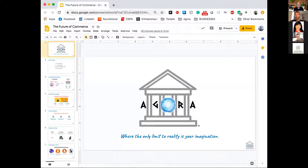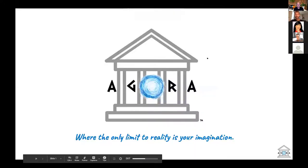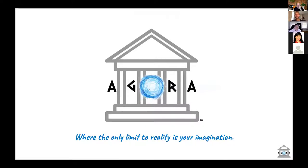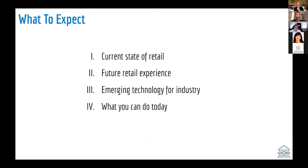Thank you for the introduction. Can you hear me okay? Just want to make sure before I get started. Awesome. Let me share my screen. Can everyone see my screen? Perfect. So again, my name is Ethan Berger and I'm the founder of Angora. What we're doing at Angora is building VR and AR marketplaces — virtual reality and augmented reality — giving brands the opportunity to create virtual storefronts in a 3D environment instead of a website, or on top of their already usable sales channels. I did just graduate from Temple University about two and a half, three weeks ago, so this is pretty new to me. What to expect today: I'm going to talk about the current state of retail, move on to the future retail experience, and discuss how you can get involved in that now and be ready for the change in the future.